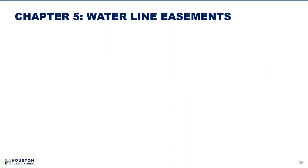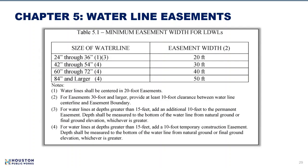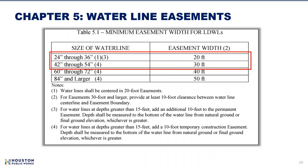The waterline easement section was updated this review cycle. The large diameter waterline easement table was moved from Chapter 7 Appendix A to Chapter 5, and all table notes were updated from the 2021 version. The easement size for a new pipe range of 42-inch to 54-inch diameter pipes is 30 feet, while 24-inch to 36-inch diameter pipe easement width has been reduced from 30 feet to 20 feet.